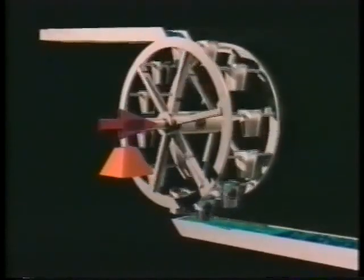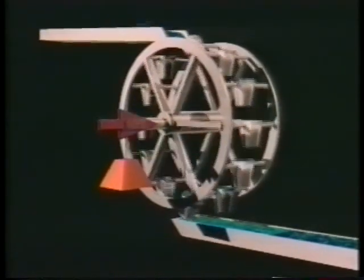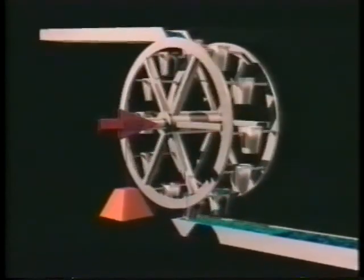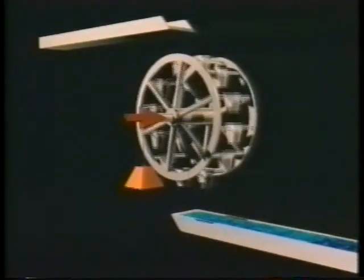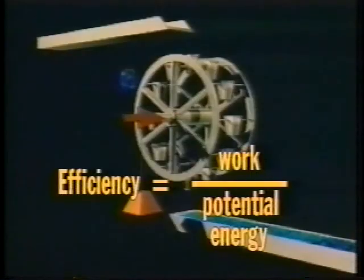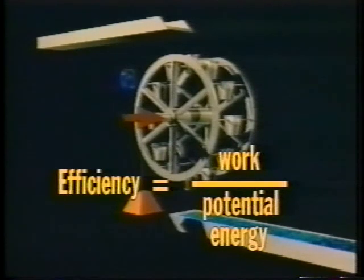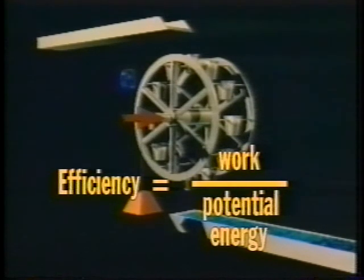If we store up the work from the ideal wheel, for example by raising a weight, we should be able to use it as a pump to restore the water to its original height. But if the wheel is smaller than the distance between the flumes, some of the water's potential is lost without doing any work. When we try to reverse the wheel, it cannot raise all the water back to its original height. The efficiency of the water wheel could be defined as its net work output divided by the total potential energy of the water. By this definition, the efficiency of a perfectly sized frictionless wheel would be 100%.